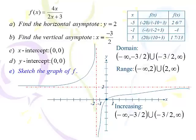Now that we have a sketch, the domain is negative infinity to negative 3/2 union negative 3/2 to infinity. The range: we jump over the 2 — so negative infinity to 2 union 2 to infinity. When is it increasing? It's increasing for the entire domain. The function is always going up as you go from left to right; it jumps over the vertical asymptote and then heads up again. At no point is this actually going down.